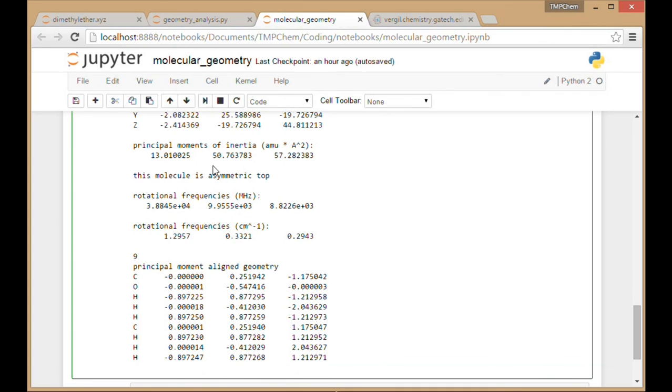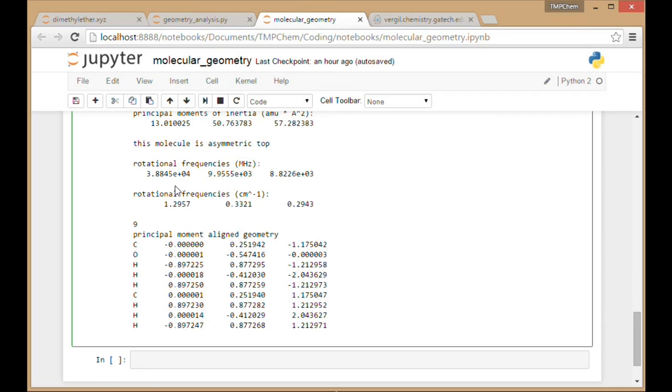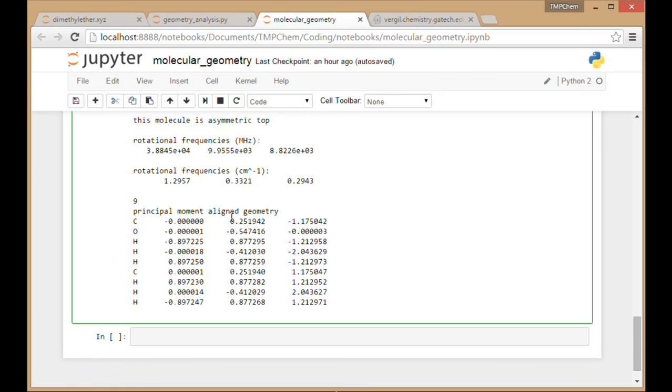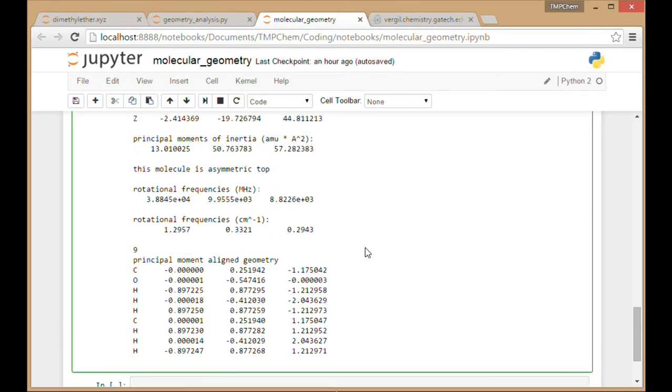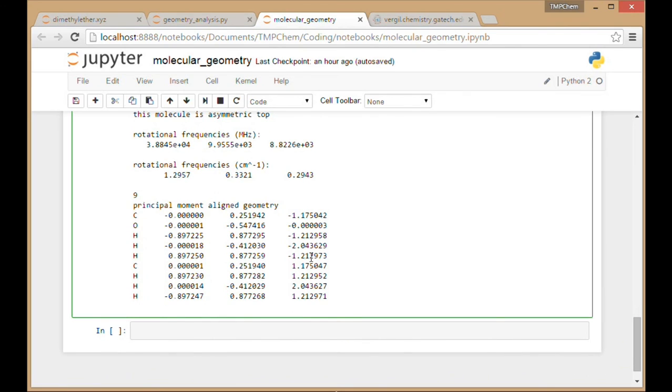We get those rotational constants in AMU-angstrom squared. Determine that it's an asymmetric top because none of these values are the same. Convert those to megahertz, 10 to the 4th-ish and 10 to the 3rd-ish in megahertz. And then in wave numbers, there are about 1 or 0.3 wave numbers in those cases. This geometry aligned to the principal moment - in this case, since it is asymmetric top, this is a unique orientation where we've removed the redundancy from the XYZ coordinates. The translations going away because we went to the center of mass, and the rotations going away because we have translated to a frame in which the moment of inertia tensor is diagonal.